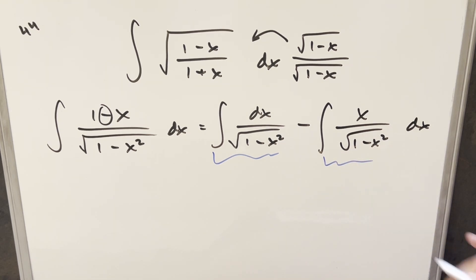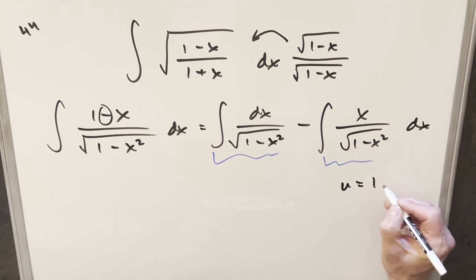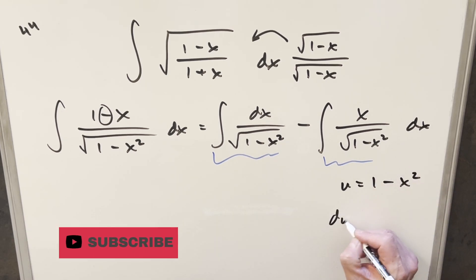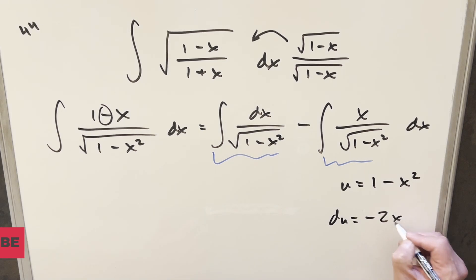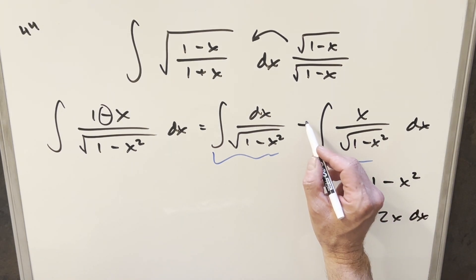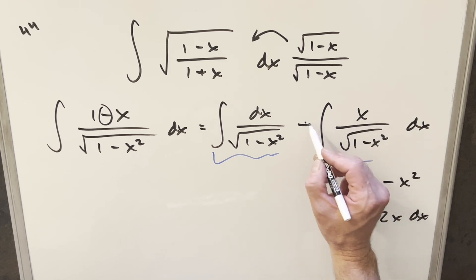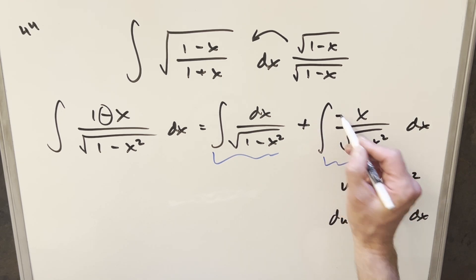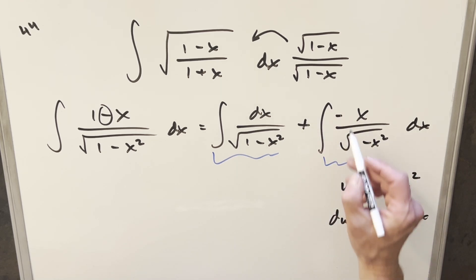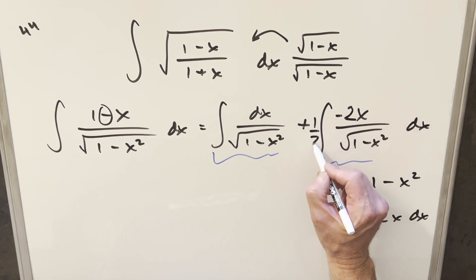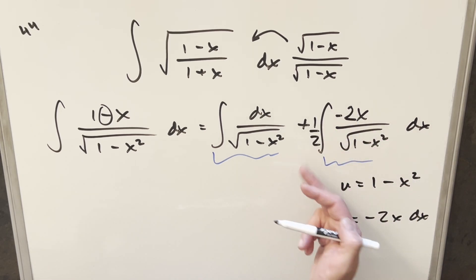For my u-substitution, I'll set u equal to 1 minus x squared. Taking the derivative, du is going to be minus 2x dx. To set up du properly, I'll bring the minus sign inside the integral, changing it to a plus and multiplying by a minus. I'll also multiply in a 2 and then a half in front so I'm not changing the value.